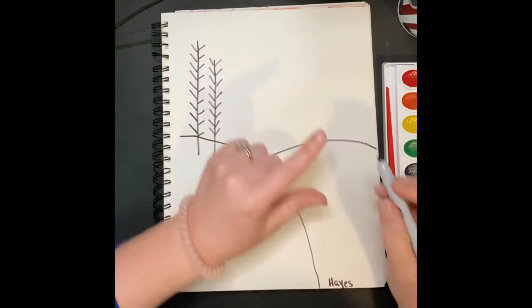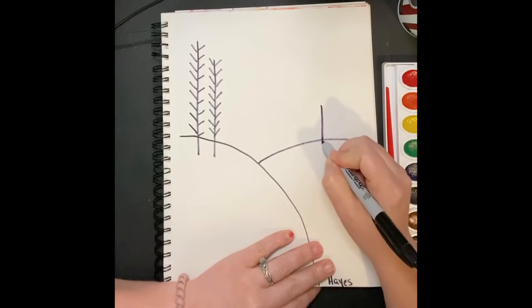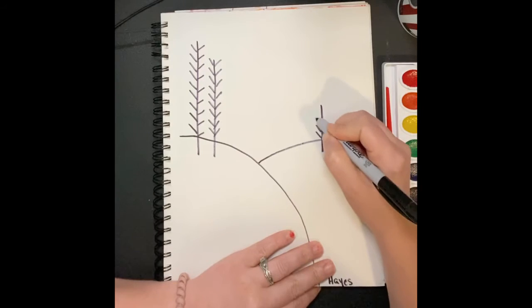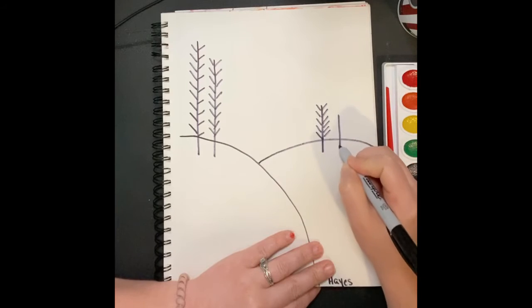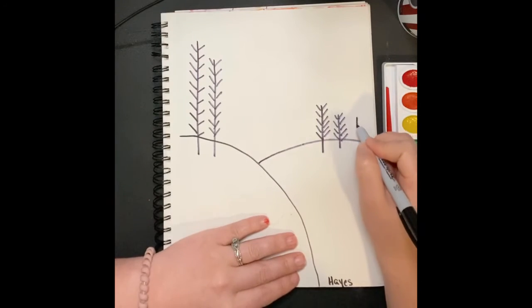For here I'm going to draw some trees but I'm going to draw them smaller because they are farther away. And if something is farther away it is smaller. If something is bigger it means it's closer to you.